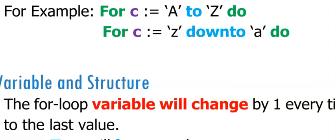If your for loop had more than one line of code to execute on the inside, you will have to use a begin and an end after the do.